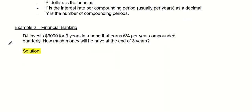Let's read example two. DJ invests $3,000 for three years in a bond that earns 6% interest per year, and it's compounded quarterly. Quarterly means every three months, or divided by four. In one year there are four quarterlies. It's asking how much money will he have at the end of three years?